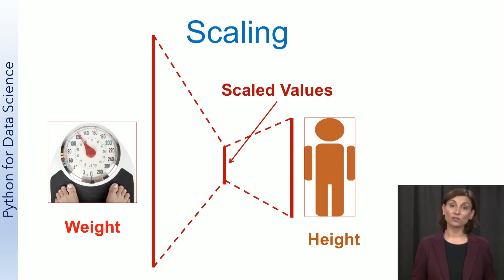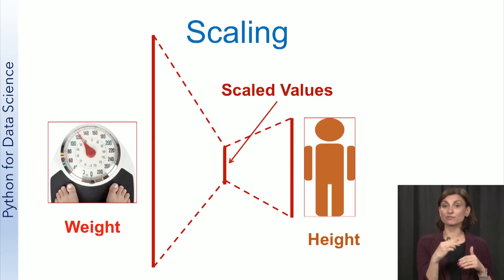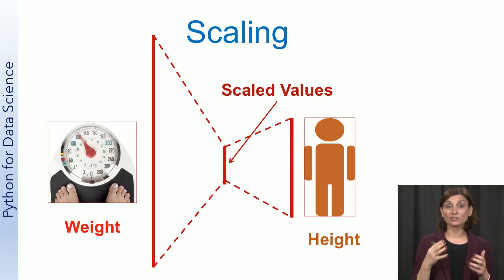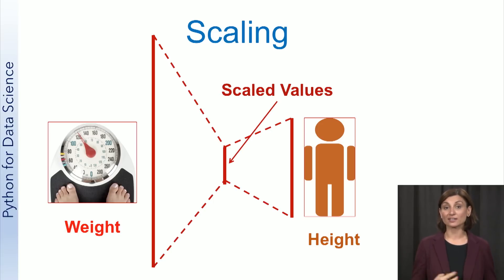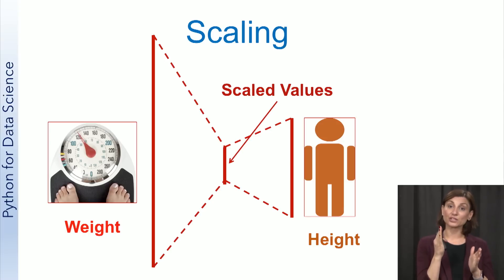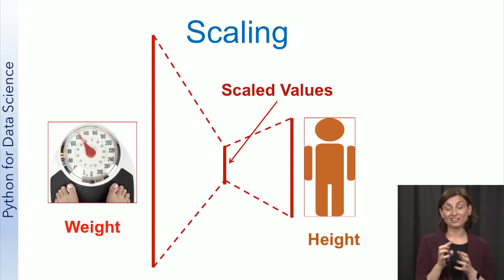Scaling involves changing the range of values to be between a specified range, such as from 0 to 1. This is done to avoid having certain features with large values from dominating the results. For example, in analyzing data with height and weight, the magnitude of the weight values is much greater than the magnitude of the height values. So scaling all values to be between 0 and 1 will equalize contributions from both height and weight features.